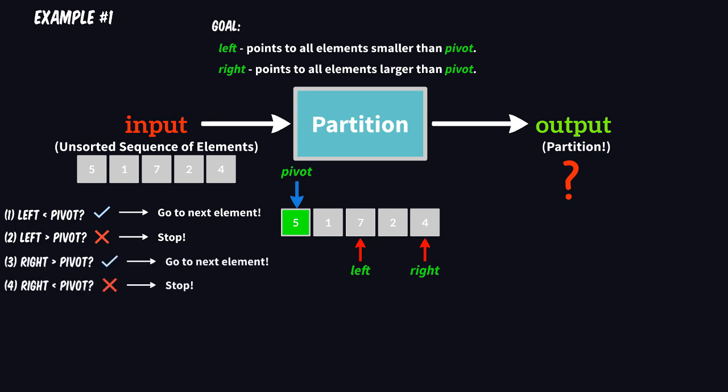If the right cursor is greater than the pivot, then it's okay, and you may go left. Otherwise, stop. Which is exactly the case right now. Four is not greater than five. That's exactly why we should stop.